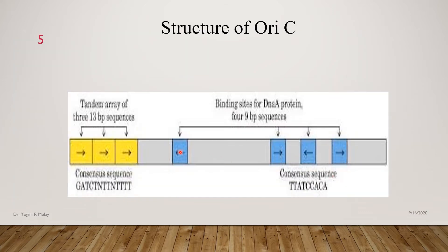These 9 base pair repeats and 13 base pair repeats are known as consensus sequences. What is meant by consensus sequence? These are conserved sequences, meaning they do not undergo many changes. These are reserved sequences, and OriC gene is characterized by the presence of 4 nine-base-pair consensus sequences and 3 thirteen-base-pair consensus sequences.